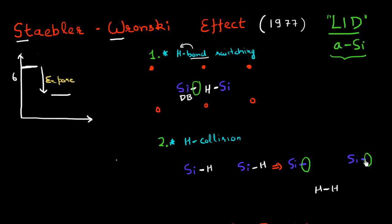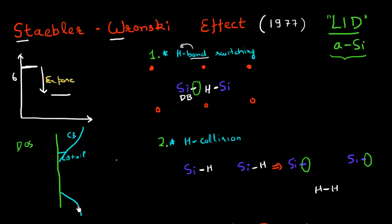You might have already guessed that this creation of dangling bond states is not a good thing. In terms of the solar cell, I can represent the density of states: for amorphous silicon, I have a conduction band and a conduction band tail, and similarly a valence band and a valence band tail. The band gap for amorphous silicon is close to 1.78 electron volts. What these dangling bonds do is create states within this forbidden region — right in the middle of the band gap.